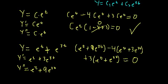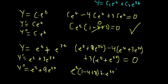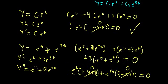That should equal 0 — let's see. We group the e to the t terms and e to the 3t terms: e to the t times (1 minus 4 plus 3) plus e to the 3t times (9 minus 12 plus 3). We know 1 minus 4 plus 3 is 0 and 9 minus 12 plus 3 is 0, so we get e to the t times 0 plus e to the 3t times 0, which equals 0. That's true — so the sum of two solutions is also a solution.